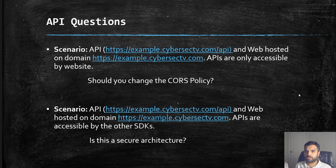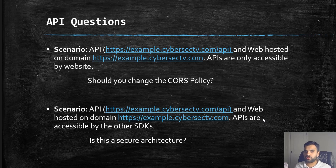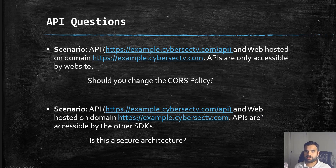If you make the CORS policy only accessible by your website domain, all the other SDKs won't be able to access your APIs — that's not a good option. If you set it to a wildcard star, your APIs will be accessible by any domain, but this also means your website domain is accessible by anyone, which we don't want. There is a lot of phishing-kind of attack that can be done. So that's also not a good option.